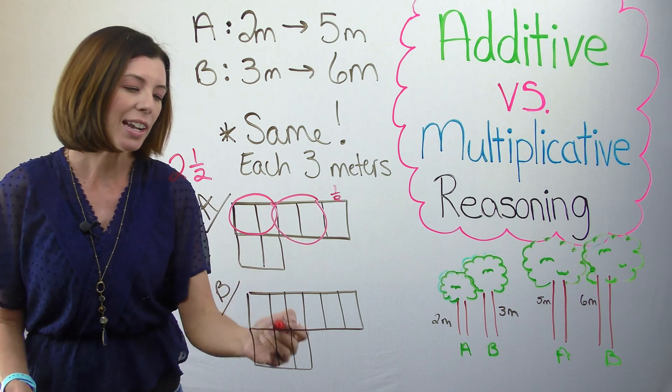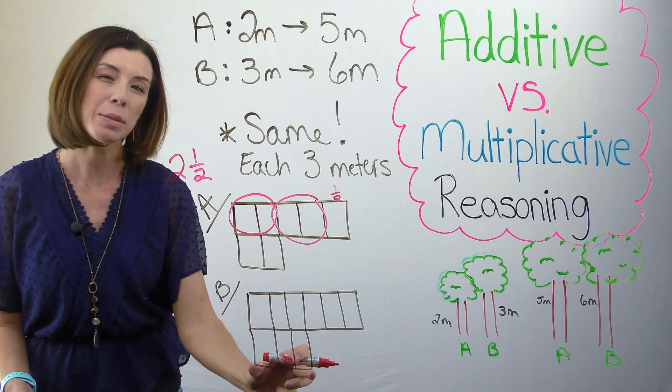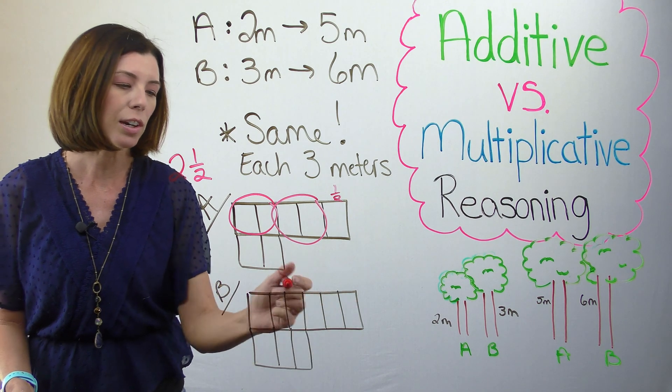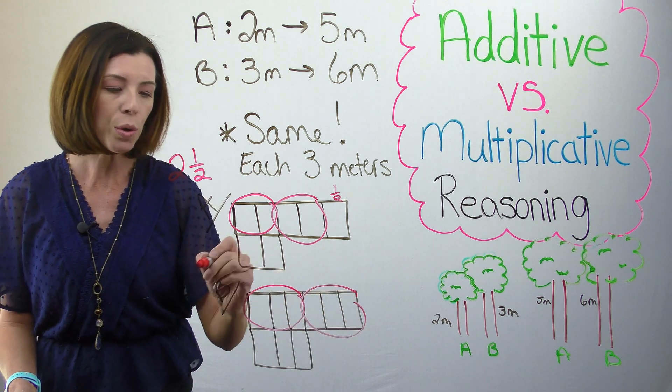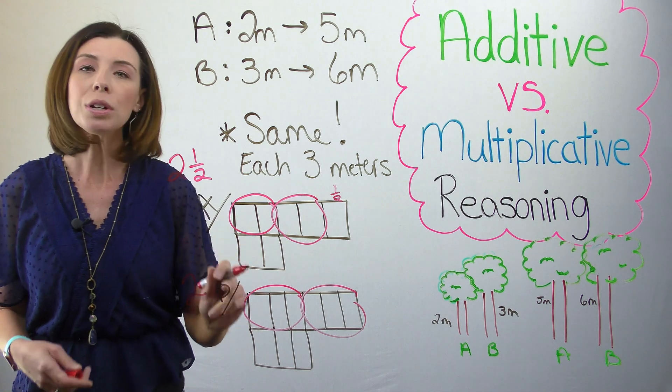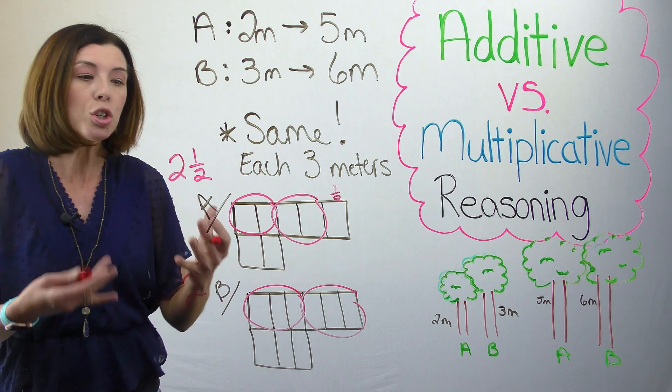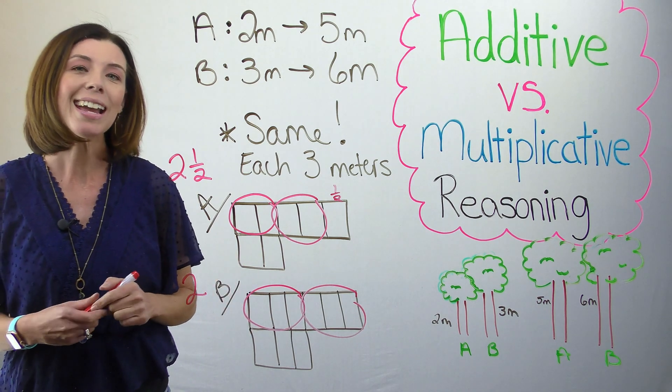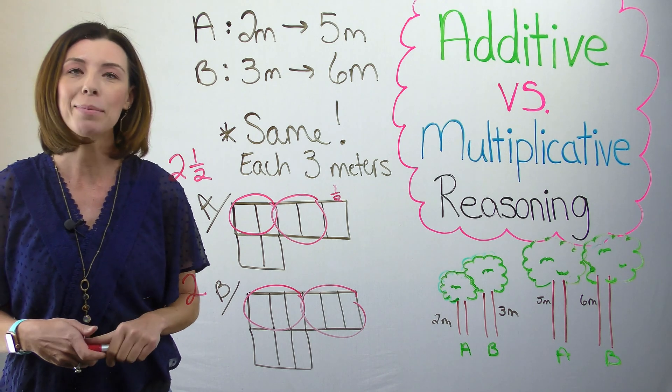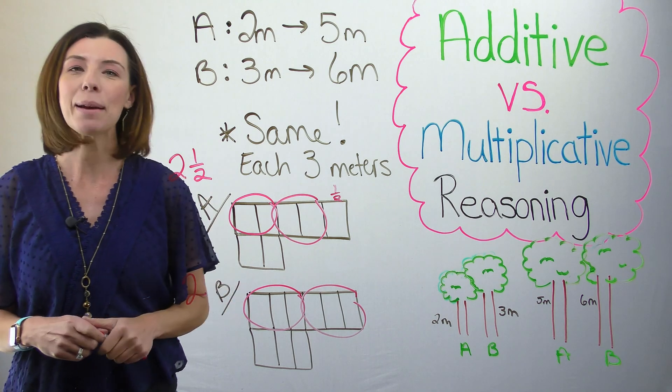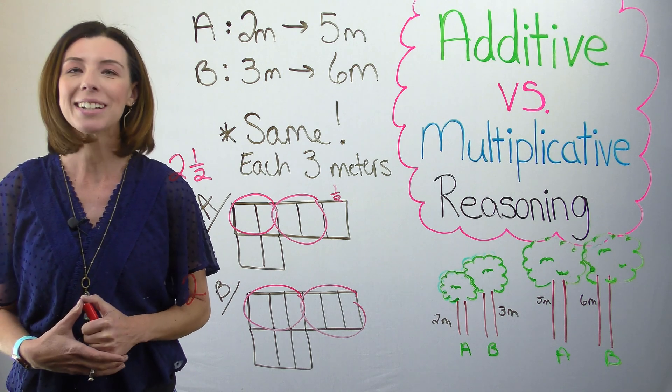Tree B, on the other hand, when I say how many copies of this smaller tree that we started with are in the larger tree, I can see that there's only two copies. So tree B doubled in size. It's two times bigger. But tree A grew two and a half times its original size. This is an example of multiplicative reasoning.